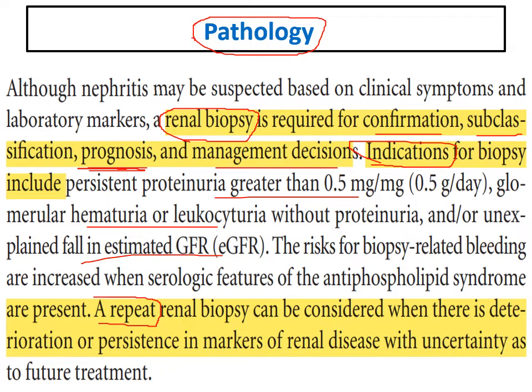A repeat renal biopsy can be indicated when you suspect a change in class. For example, if a patient had class 2 and entered remission but now presents with severe nephritic syndrome or RPGN or heavy proteinuria, a new renal biopsy should be performed — because there can be a change in histological class — to determine the new management protocol.